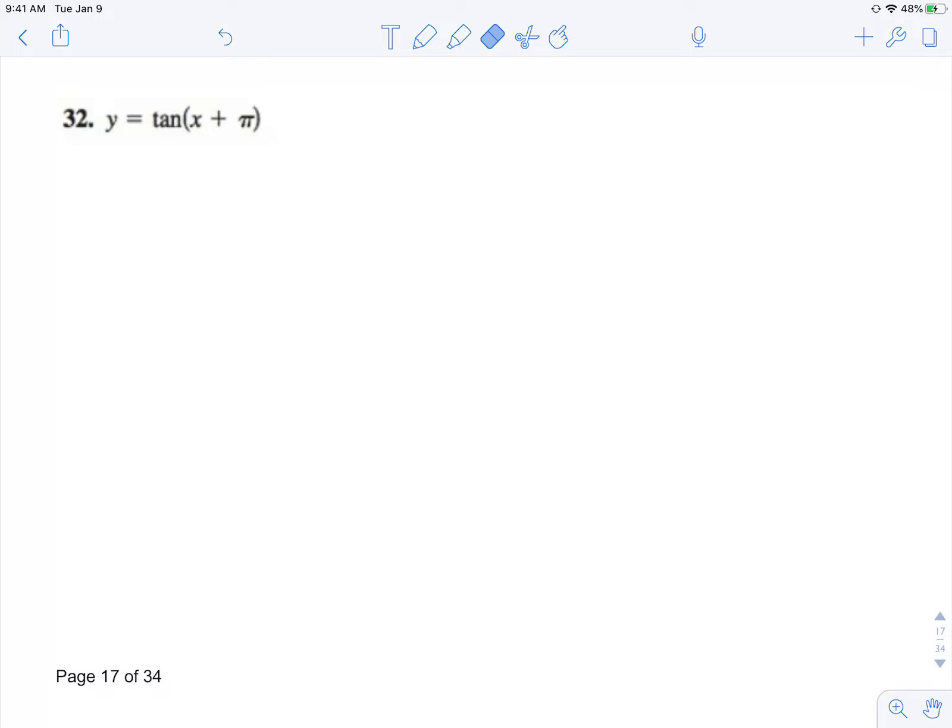So in our last example for tangent, we have a phase shift, but we still do everything the same. Our vertical asymptotes occur when what's inside of our tangent equals negative π/2 or π/2. Subtracting π from both of these, x equals negative 3π/2 or x equals negative π/2.